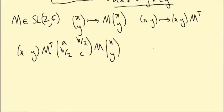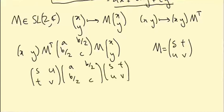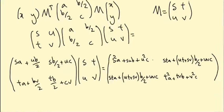To be completely explicit: if M has entries s, t, u, v, we write out s, u; t, v times a, b/2; b/2, c times s, t; u, v. I'll pause to multiply these matrices out — I encourage you to do the same and check you get the same answer. This is the result after doing it in two steps; you can pause and verify your working.